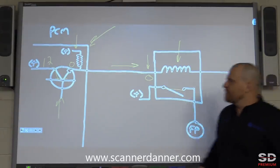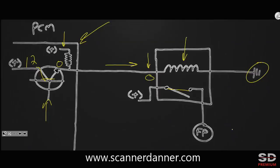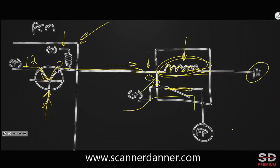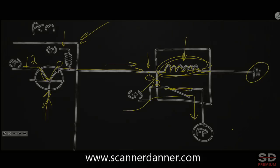I want the pump to run. The computer turns the base of the transistor on, which allows that 12 volts to extend through. This changes to 12. We now have current flow through the winding, so it makes a magnetic field, closes this switch, and then the heavy load side runs the pump. There's your circuit.